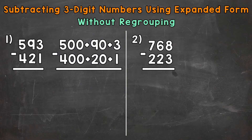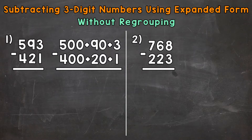Let's jump into number one, where we have 593 minus 421. The first thing that we need to do is put these numbers into expanded form. Remember, expanded form is where we expand the number to show the value of each digit.